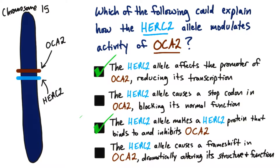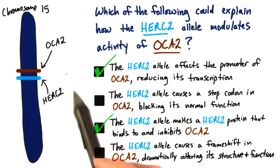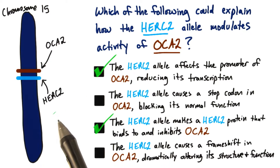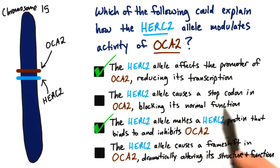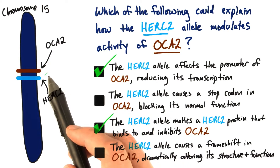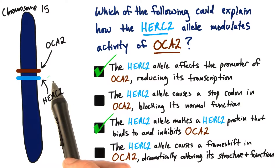This is kind of a tough question. It's really putting together a lot of the knowledge we've talked about up to this point, about coding regions and non-coding regions, and possible interactions among different proteins, as well as their locations on the chromosome. If the two genes are beside each other, then alleles changing the coding region of OCA2 aren't really possible, because we're not saying they're overlapping — they're beside each other.